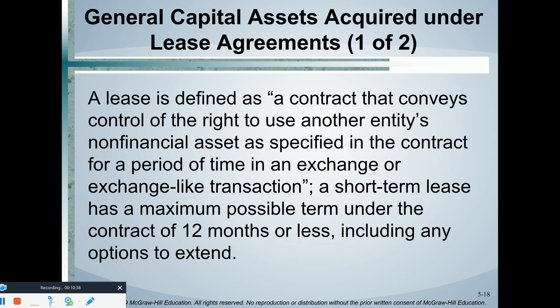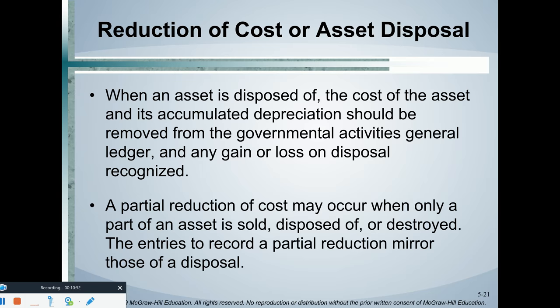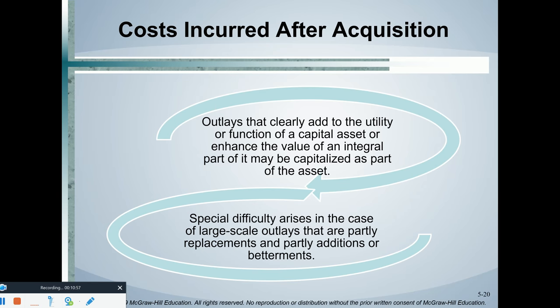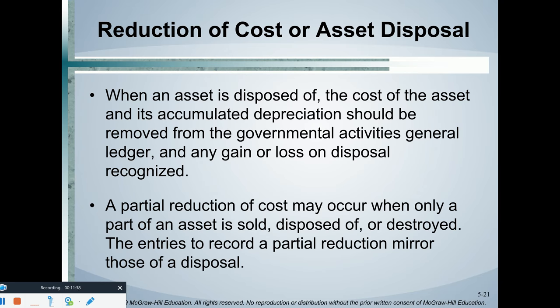If we have a capital lease, we would record at the government-wide level an asset and a long-term liability for the capital lease. If we incur costs after acquisition, similar to prior accounting classes, if they add to the function of the asset we can capitalize that cost. If it's simply a normal repair and maintenance item, that would be an expense for the government-wide statements. Everything is an expenditure for the governmental fund. If it adds to the utility or function of the capital asset, we capitalize it; if not, it's a normal period expense. If there is a permanent write-down due to impairment, we record an impairment loss.